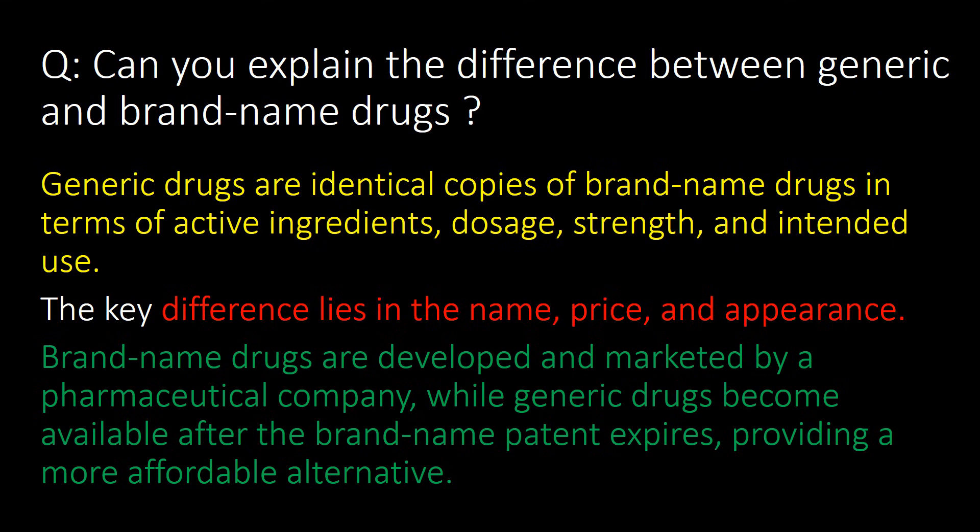Can you explain the difference between generic and brand name drugs? Generic drugs are identical copies of brand name drugs in terms of active ingredients, dosage, strength, and intended use. The key difference lies in the name, price, and appearance. Brand name drugs are developed and marketed by a pharmaceutical company, while generic drugs become available after the brand name patent expires, providing a more affordable alternative.